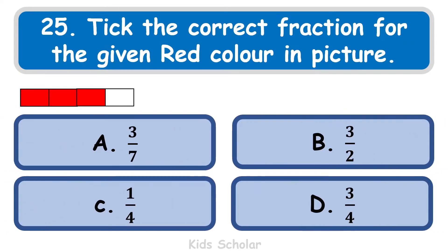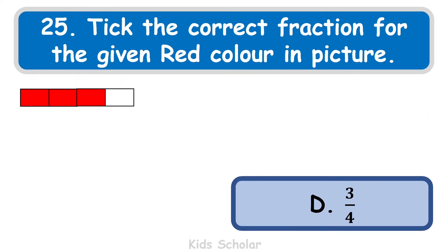Next question is: tick the correct fraction for the given red color in the picture. You can see in the picture the total number of rectangles is 4, and the colored part is 3. So the denominator is 4 and the numerator is 3, giving the fractional form 3 by 4. The correct answer is D, that is 3 by 4.